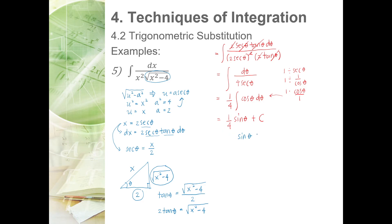From the triangle, sine theta is opposite over hypotenuse equals the square root of x squared minus 4 over x. Plugging in: one-fourth times the square root of x squared minus 4 over x plus C. The final answer is the square root of x squared minus 4 over 4x plus C.